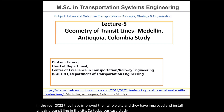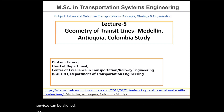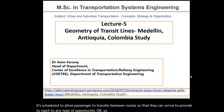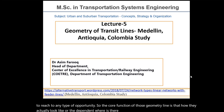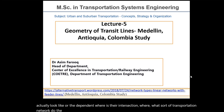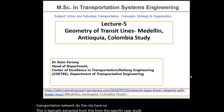Today our case study is about Medellín. The transit services can be aligned and scheduled to allow passengers to transfer between routes so that they can reach any type of opportunity. The core function of the geometry line is how they actually look, whether they are dependent, where is their intersection, and what sort of transportation network the city has. This is extracted from a specific case study whose link is also given in this lecture.